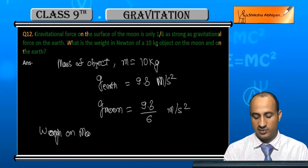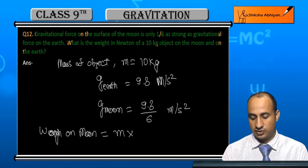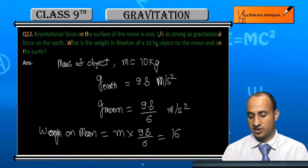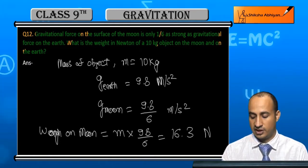Weight on moon is equal to mass into g, that is mass into 9.8 by 6, which is around 16.3 newton.